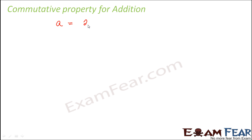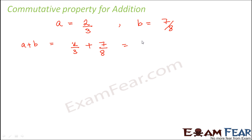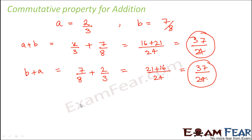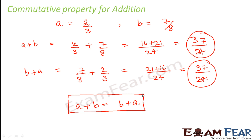Let's start with commutative property for addition. Consider rational number a as 2/3 and rational number b as 7/8. Calculating a plus b: 2/3 plus 7/8 gives 16 plus 21 over 24, which is 37/24. Now calculating b plus a: 7/8 plus 2/3 gives 21 plus 16 over 24, which is also 37/24. So a plus b and b plus a are both the same — therefore a plus b equals b plus a, and addition is commutative for rational numbers.